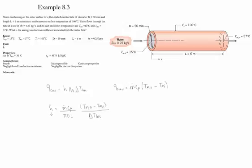To calculate the average coefficient, we first need to find ΔT_lm, which is given as the difference (Ts - Tm,out) minus (Ts - Tm,in), all divided by the natural log of (Ts - Tm,out) over (Ts - Tm,in).